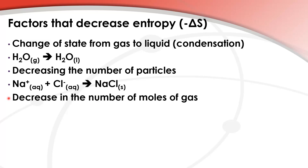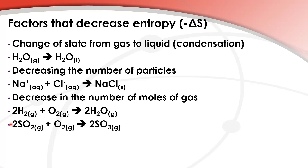Next we have a decrease in the number of moles of gas. Here we have two moles of hydrogen reacting with one mole of oxygen to give two moles of water vapor. On the left side we have three moles of gas and on the right we have two moles of gas — that's a decrease in entropy. Finally, two moles of sulfur dioxide reacting with one mole of oxygen gives two moles of sulfur trioxide. On the left we have three moles of gas and on the right two moles of gas — that's a decrease in entropy.